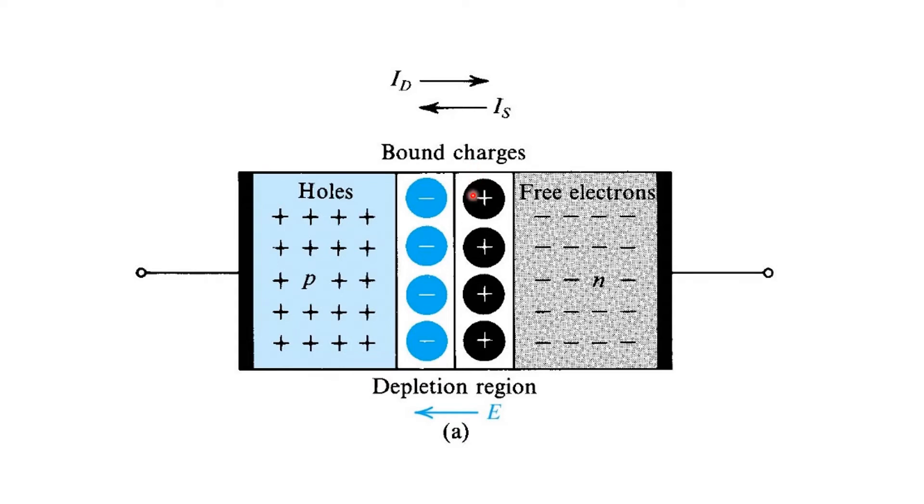However, since we've got a bunch of fixed positive charge here on the right and fixed negative charge here on the left side of the P-N junction, naturally, we expect to see an electric field from right to left across the depletion region. Now, that electric field gives rise to a drift current. That is, any free charge carriers, be they electrons or holes that happen to stumble upon the depletion region, are subject to this electric field and are immediately swept across it, giving rise to a drift current, I-S here, flowing in the opposite direction of the diffusion current.